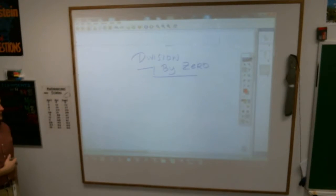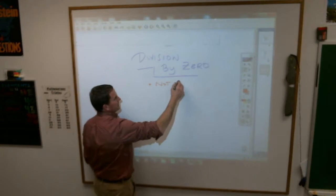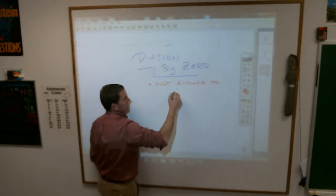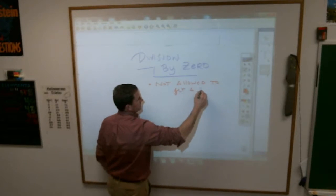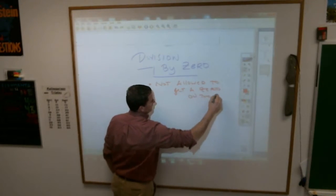It's called division by zero. If you look at the Ten Commandments of Mathematics, I believe it is number one. Thou shalt not divide by zero. You are not, ladies and gentlemen,